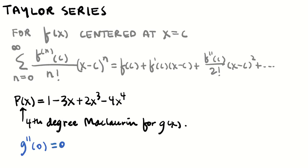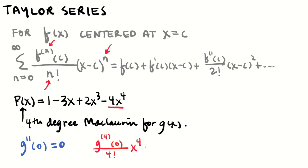What if they asked for g's fourth derivative at 0? We have to say that comes from the fourth power term — the fourth derivative divided by 4 factorial, times x to the 4. Since it's a Maclaurin polynomial centered at 0, we set g^(4)(0) / 4! times x^4 equal to the coefficient of x^4 in the polynomial.